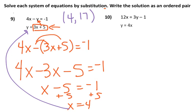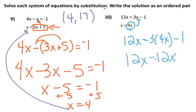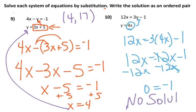And then number 10, I'm going to take this 4x, and I'm going to plug it in for y right there. So 12x equals 3 times 4x minus 1. So 12x equals 12x minus 1. I'm going to subtract 12x, and that leaves me with 0 equals negative 1. When is that true? It's never true. So the answer to this is no solution. There is no solution.